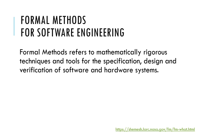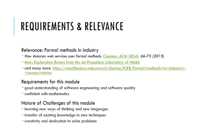We are concerned with how to use formal methods for software engineering, covering specification, design, and verification of software systems — both existing software and software we want to build. Formal methods has been applied in industry in different ways. For example, Amazon Web Services, NASA, and Microsoft Research all have divisions exploring formal methods and creating open-source tools, including one we will use in this module.